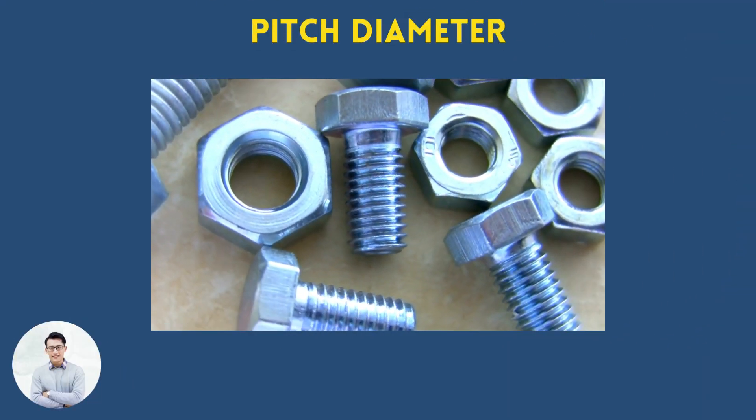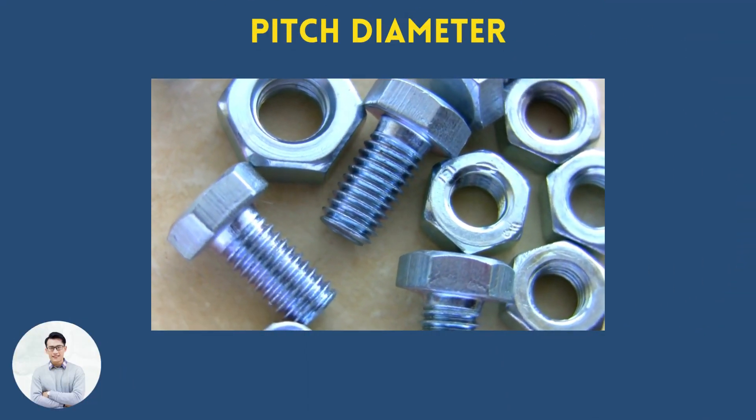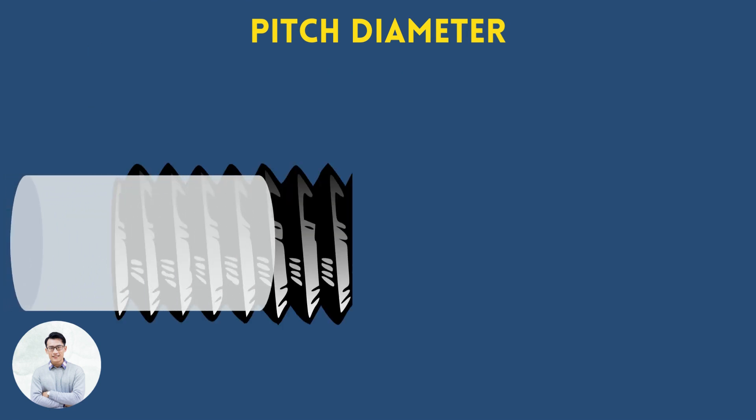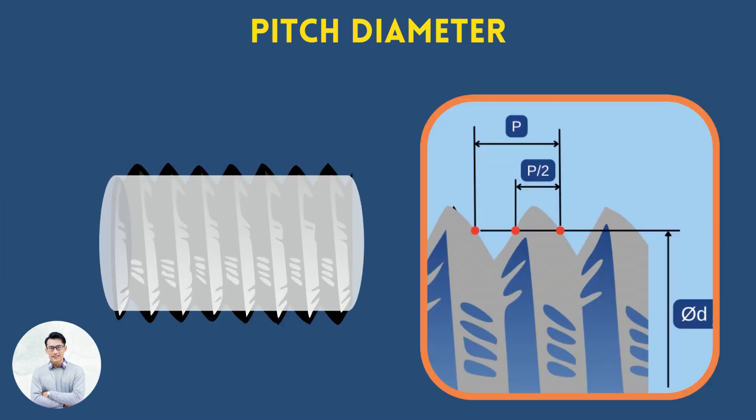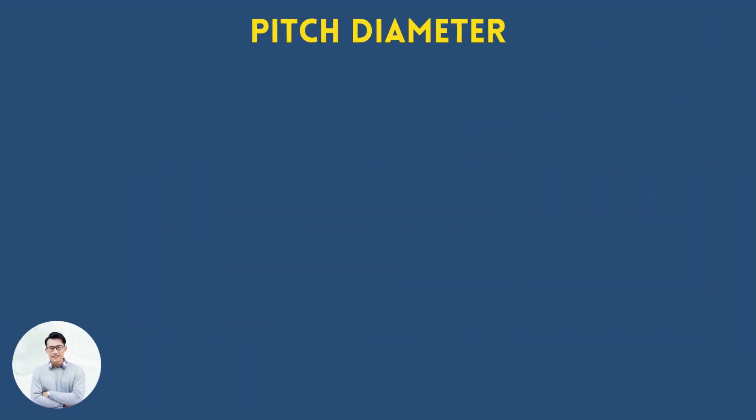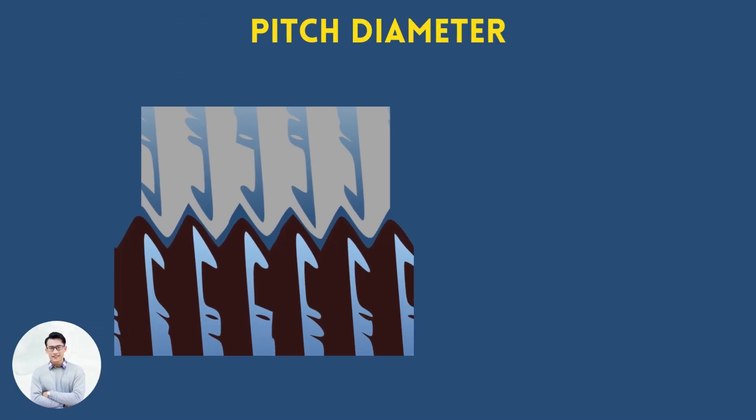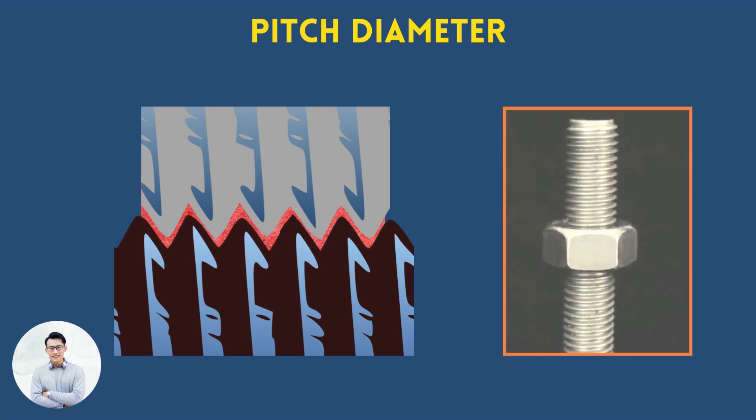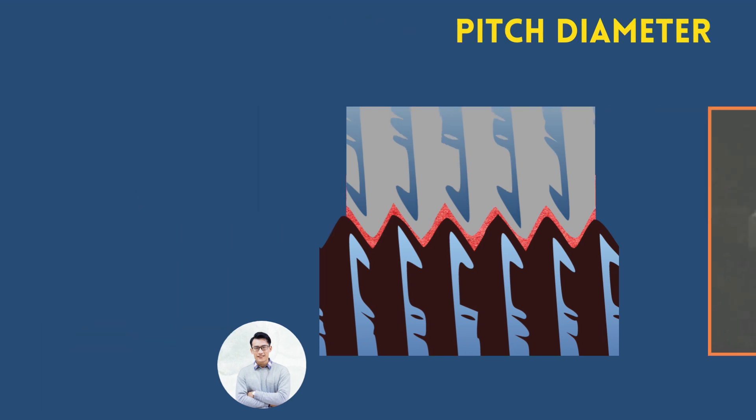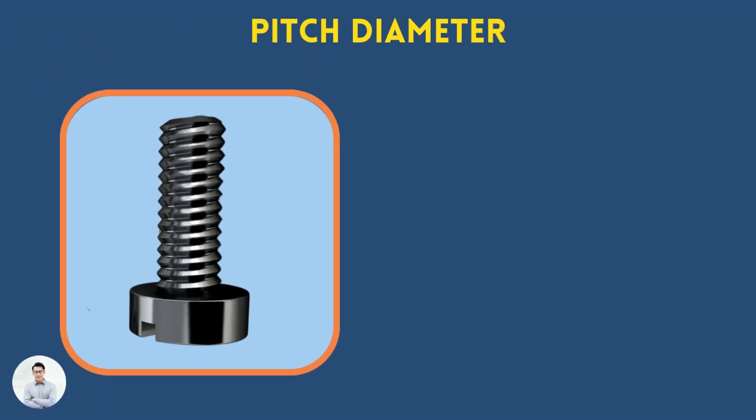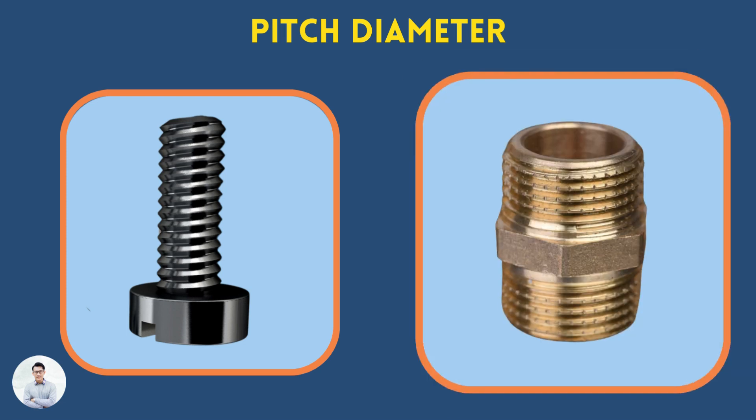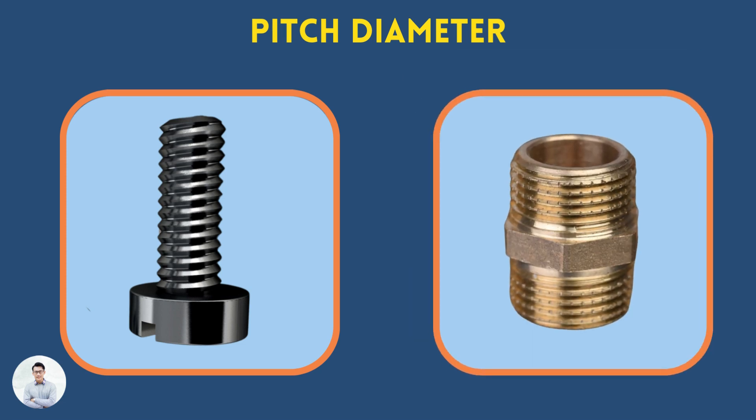The pitch diameter, also called the effective diameter, is the diameter of an imaginary cylinder that intersects the thread, so that the distance between two intersection points at opposite flanks equals half of the pitch. It is where the male and female threads meet. The allowance between the pitch diameters of two thread components determines the behavior of the assembly. Keep in mind that this definition is valid only for parallel threads. In a later episode, we will deal with the definitions related to tapered screw threads.